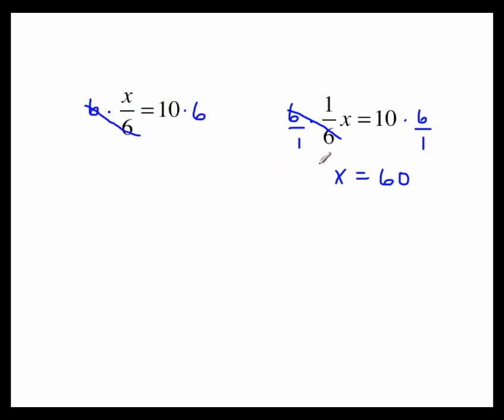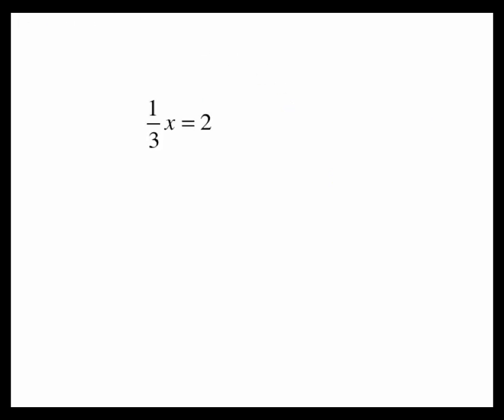The reason this idea of the reciprocal is important is that sometimes the fraction that you have may not be a 1 over 3. In this case, we're going to multiply by the reciprocal, which is 3 over 1 on both sides. The 3s cancel, and we get x equals 6.